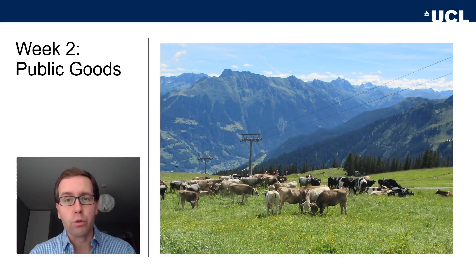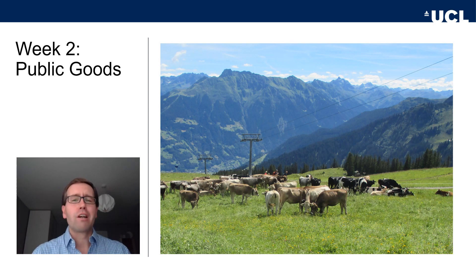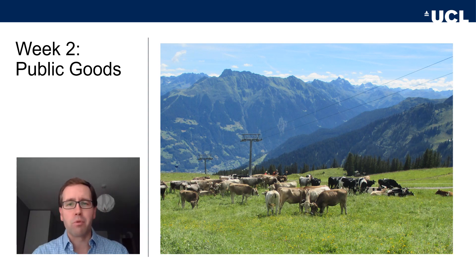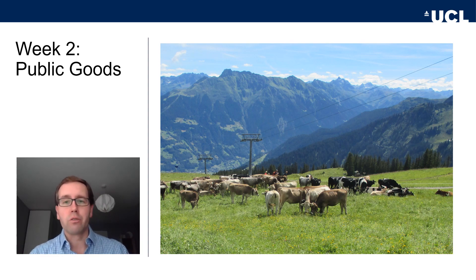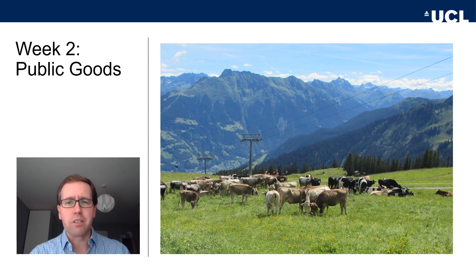Welcome to week two of Public Policy Economics and Analysis. What is going on with the cows? Well, as we will see towards the end of today's lecture, grazing cows on a common pasture are central to a big debate about selfishness and altruism, political institutions, and property rights — the so-called tragedy of the commons. This tragedy, the question of public goods and their optimal provision, and the problem of cooperation or prisoner's dilemma are the core topics of today's lecture.